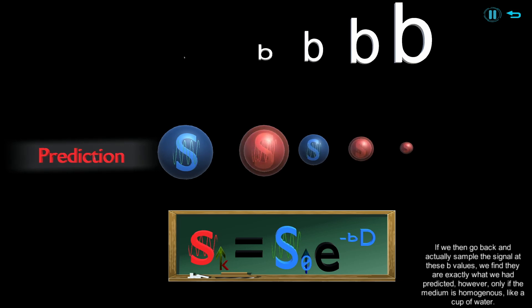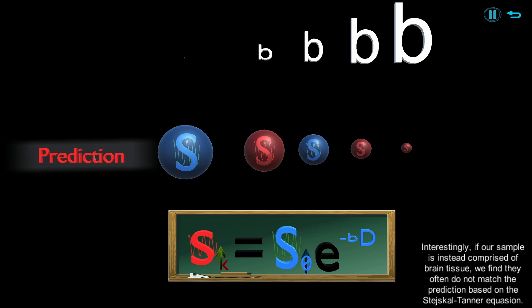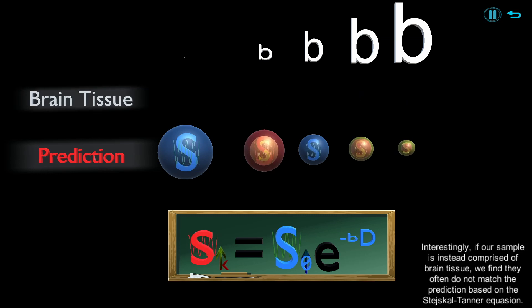However, only if the medium is homogeneous, like a cup of water. Interestingly, if our sample is instead comprised of brain tissue, we find they often do not match the prediction based on the Stejskal-Tanner equation.